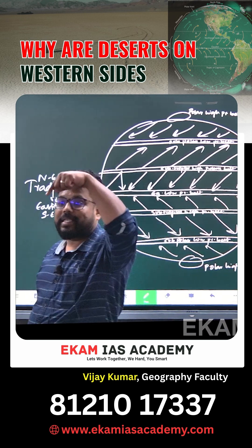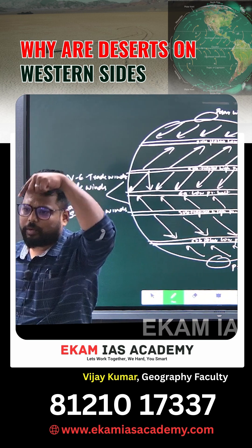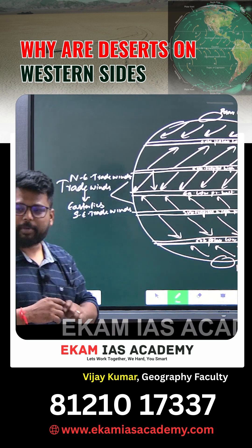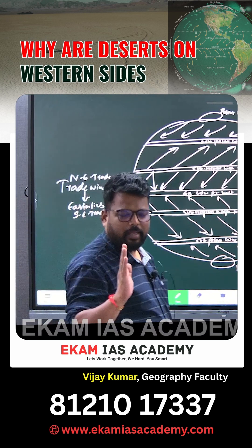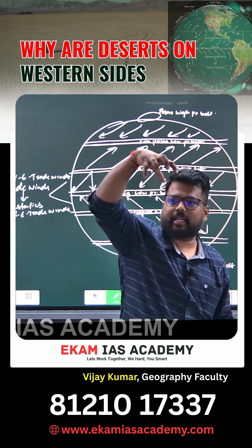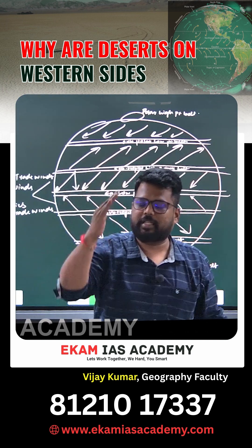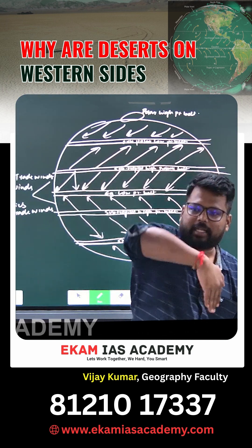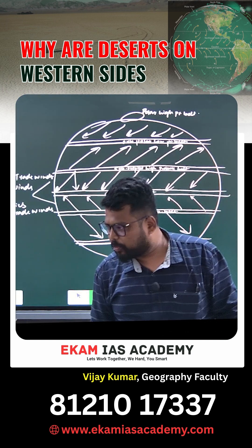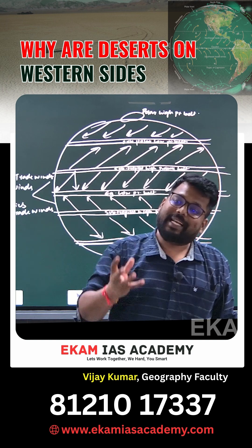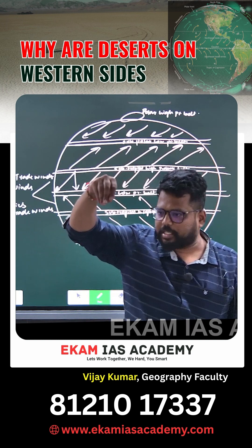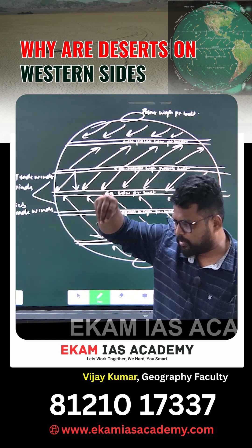We will tell you about the descending air column in the subtropics. At the equator, air ascends, but in the subtropics it tends to descend, inhibiting cloud formation. We will tell you about cloud formation in the subtropics.